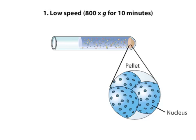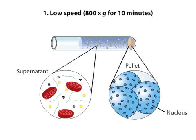Thus, an enriched fraction of nuclei can be recovered from the pellet, while the other cell components are suspended in the remaining solution, called the supernatant.